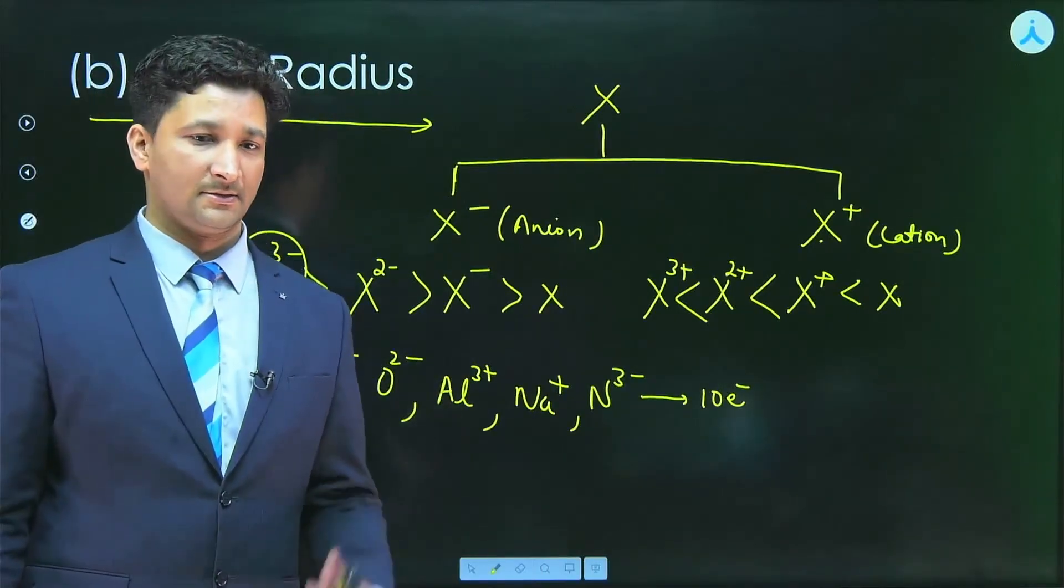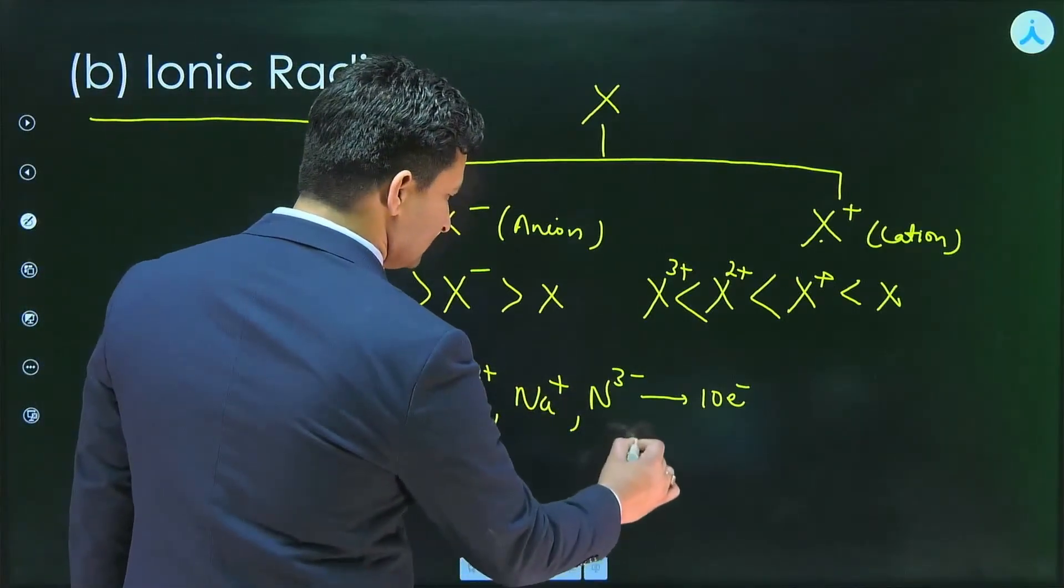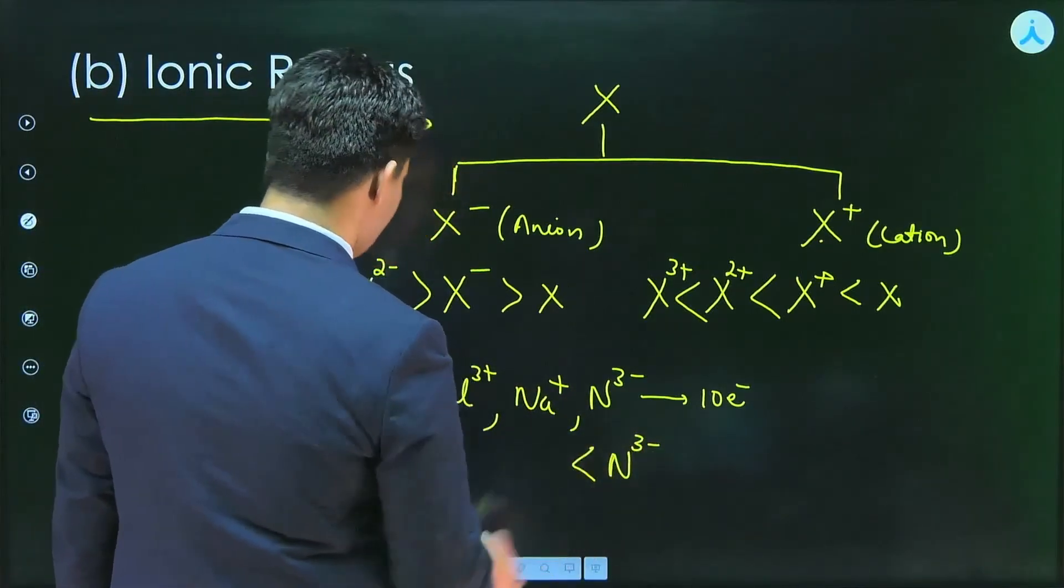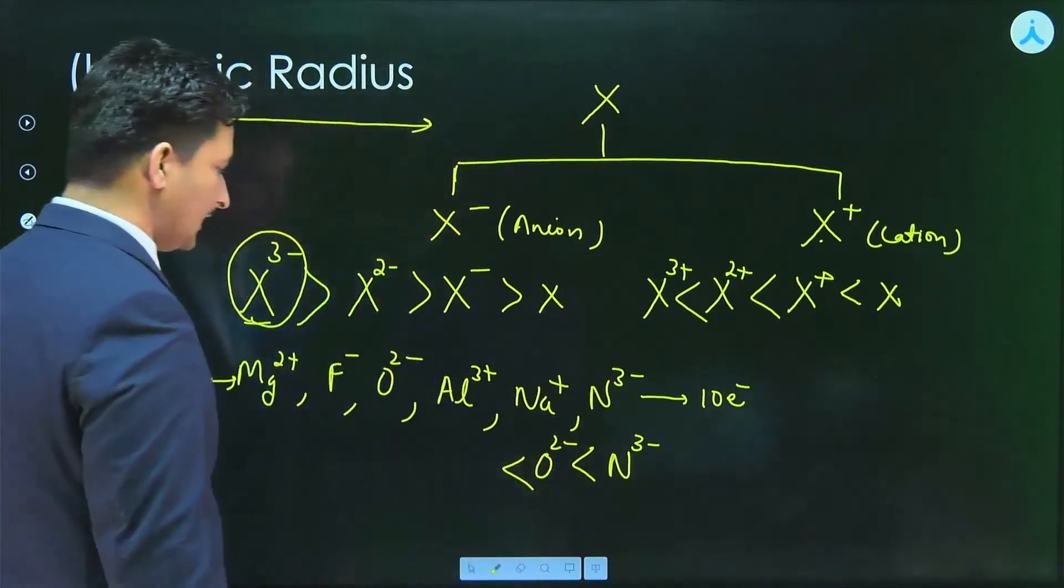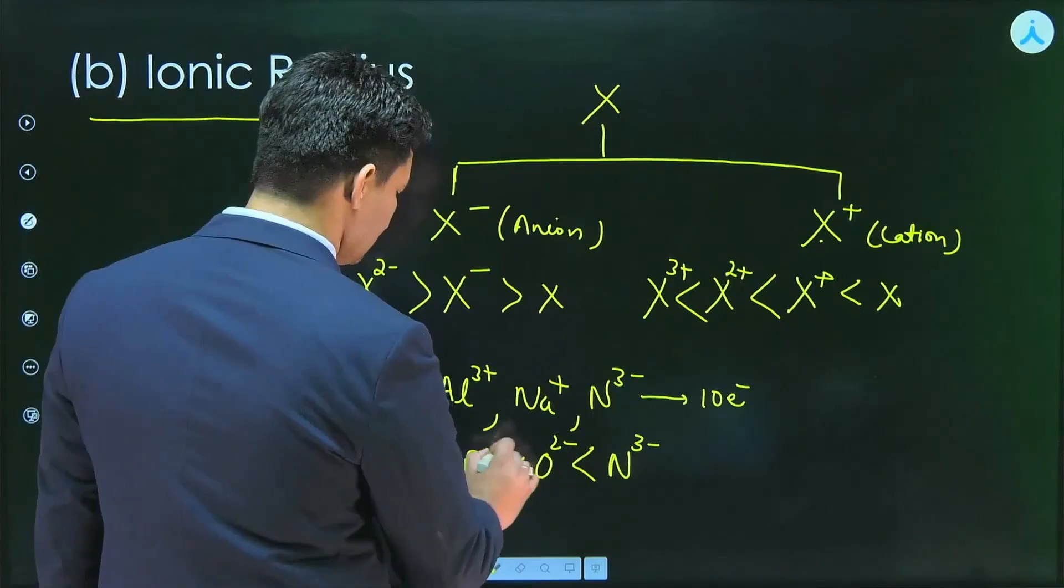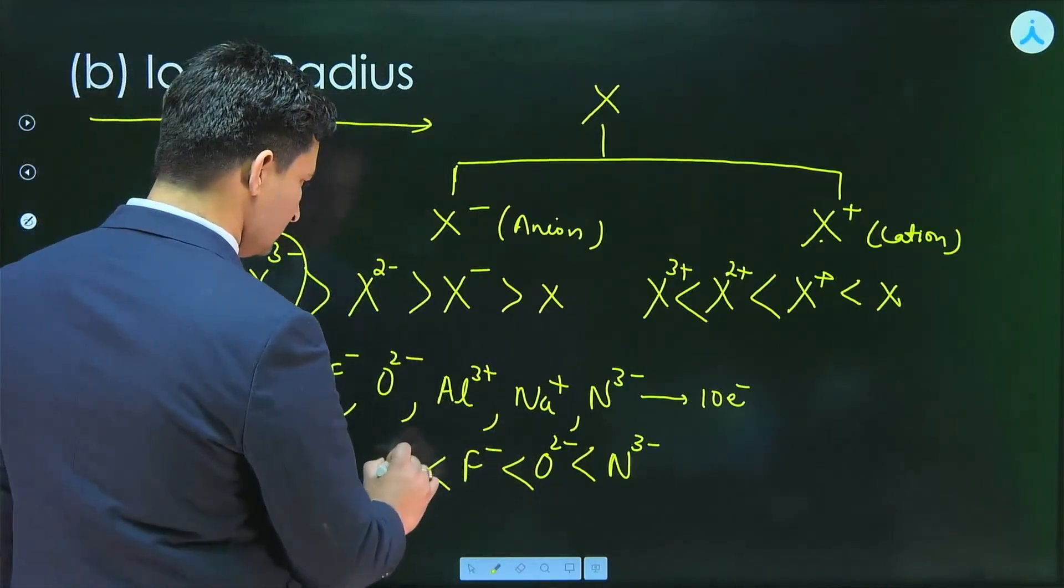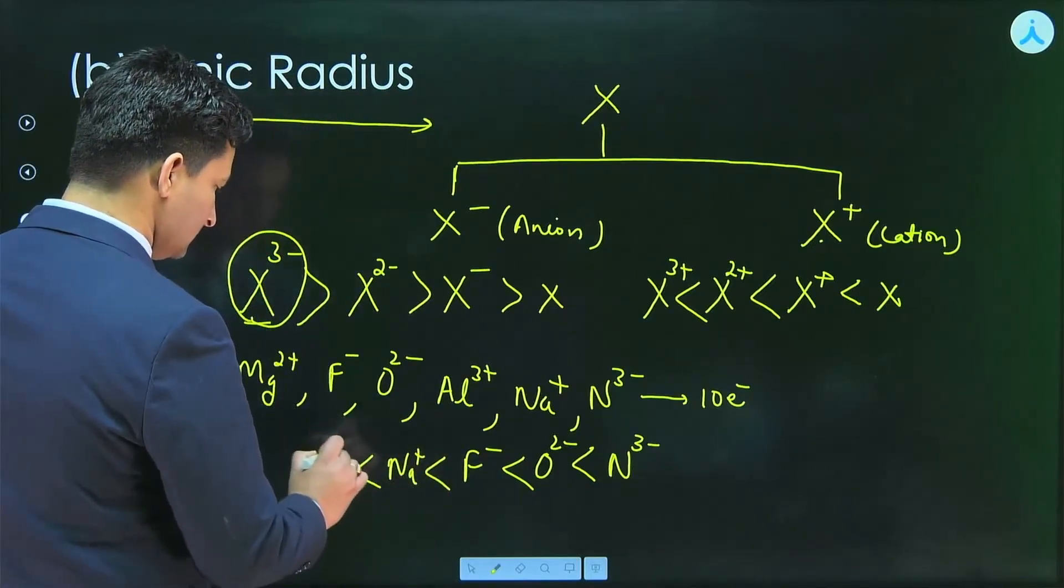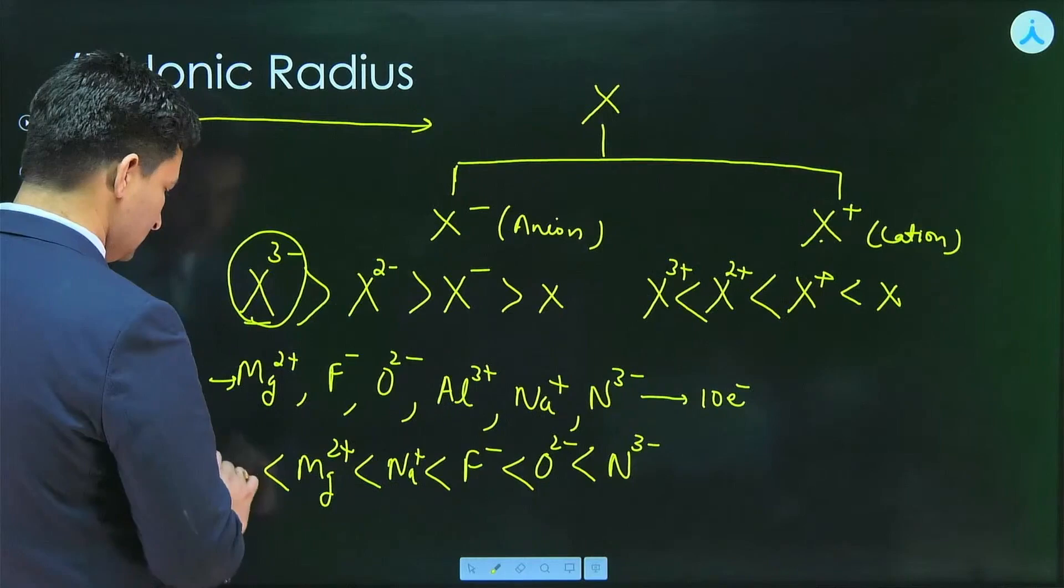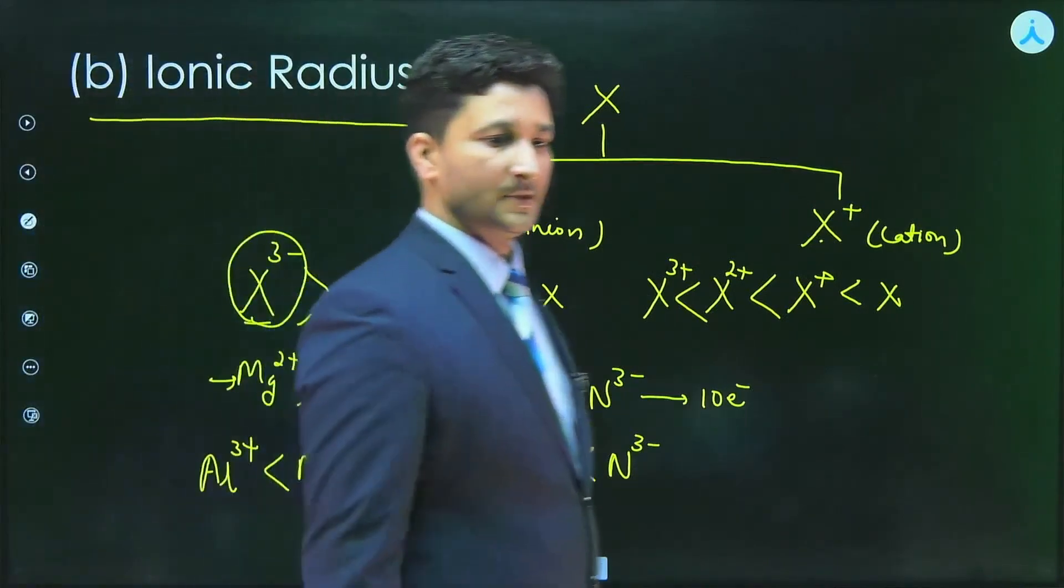As they are isoelectronic species, we discussed that greater the negative charge, higher will be the radius. So definitely N3 minus will have the maximum size followed by O2 minus, then followed by F minus, then followed by Na plus, Mg2 plus, and Al3 plus. So this is the increasing order.